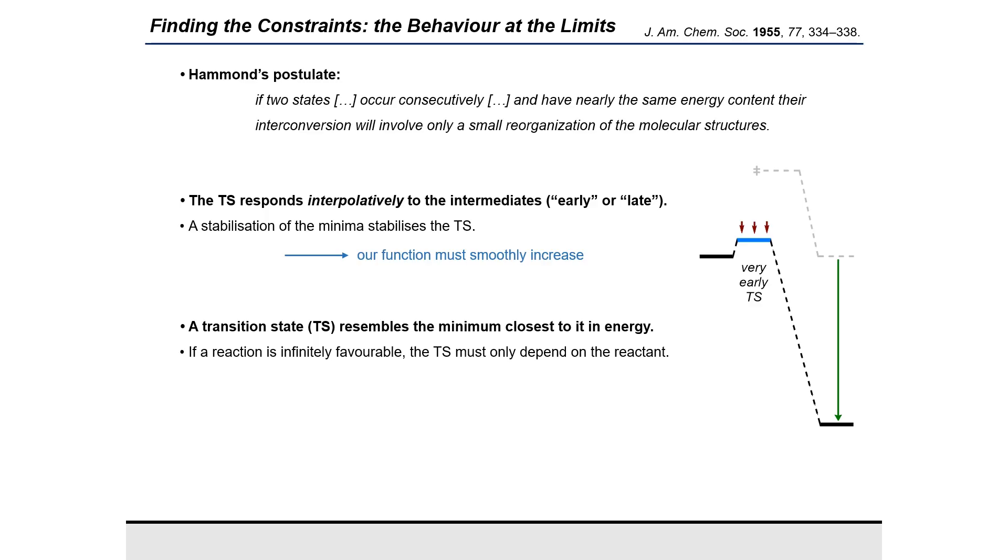And so it is very interesting to look at Hammond's postulate, which linked the position of a transition state, and thus its geometry, to the difference in energy between the reactant and the product.